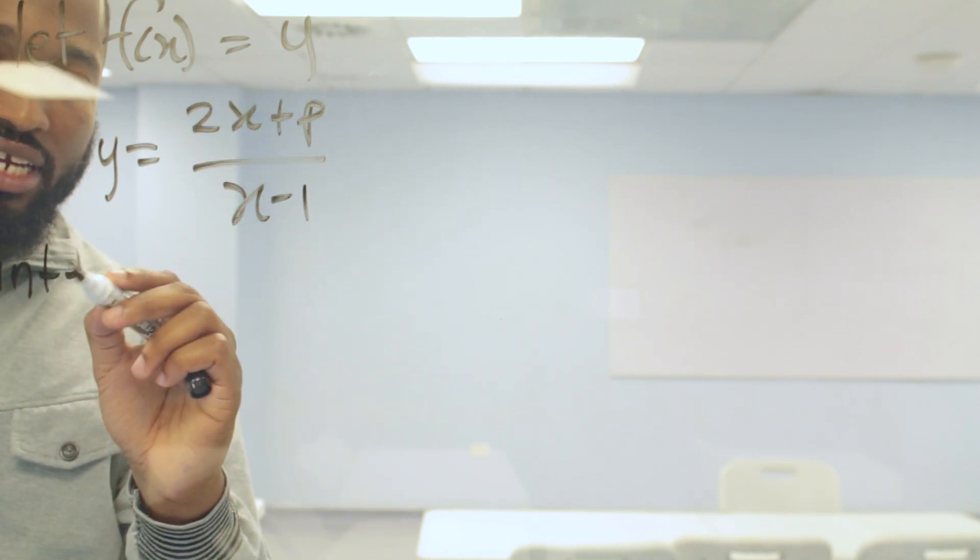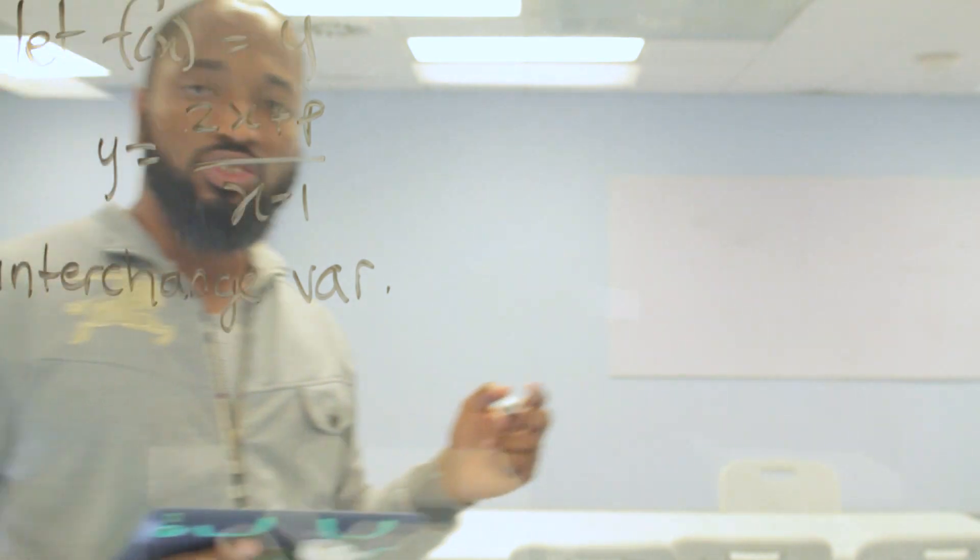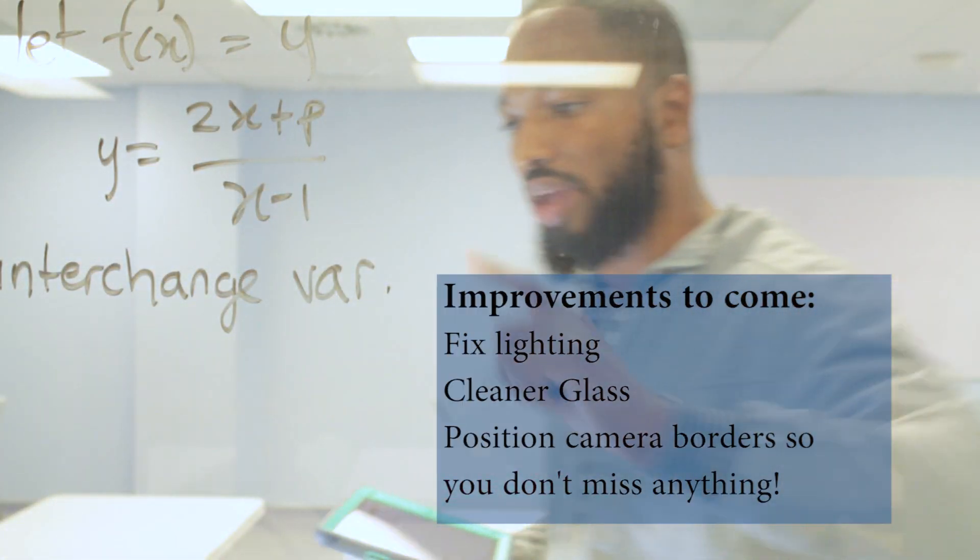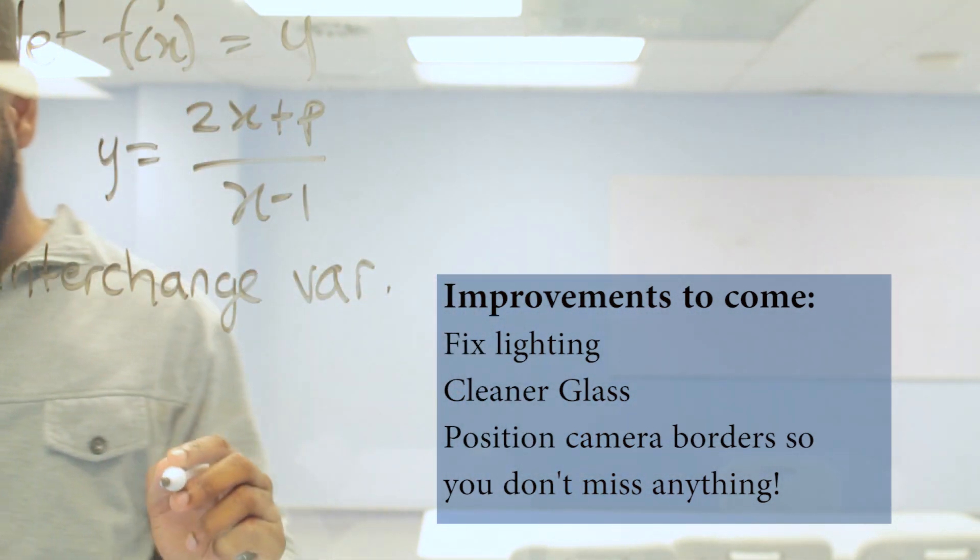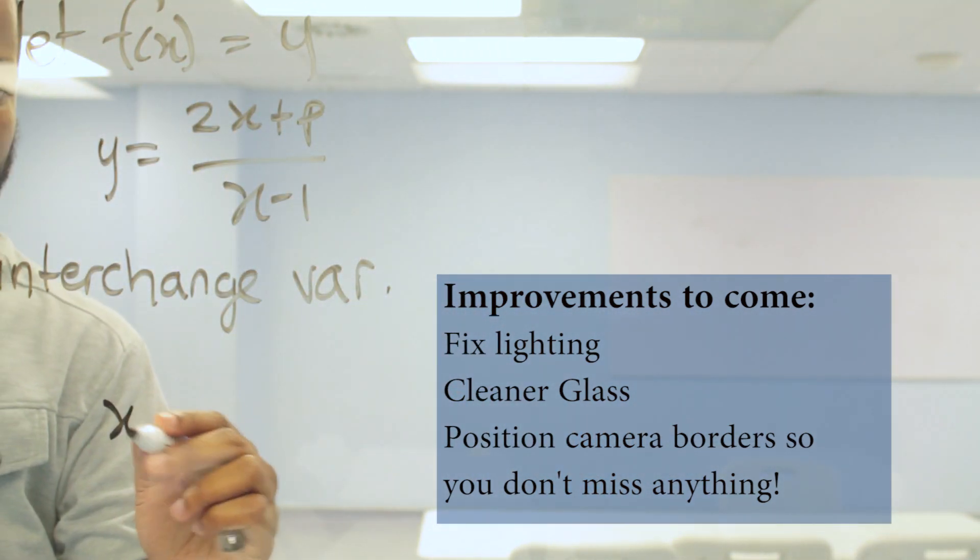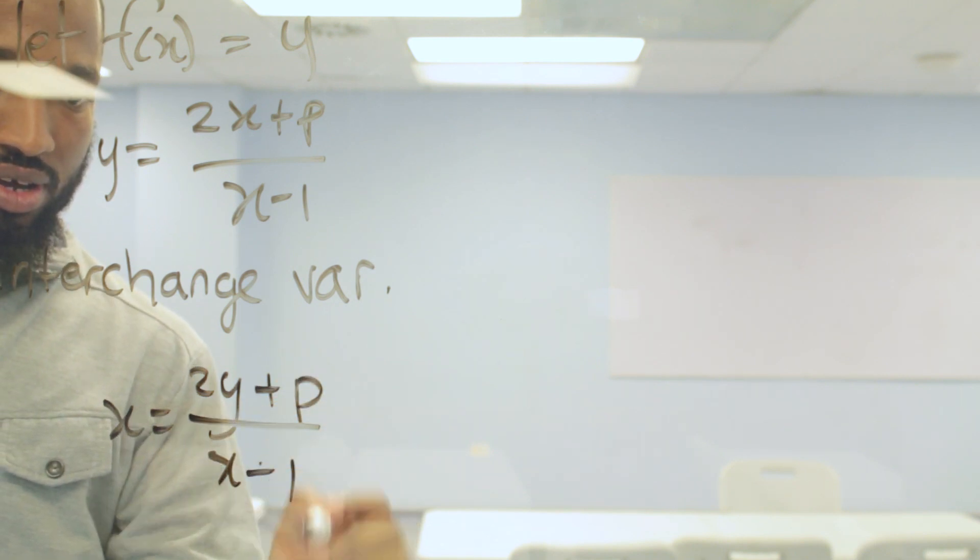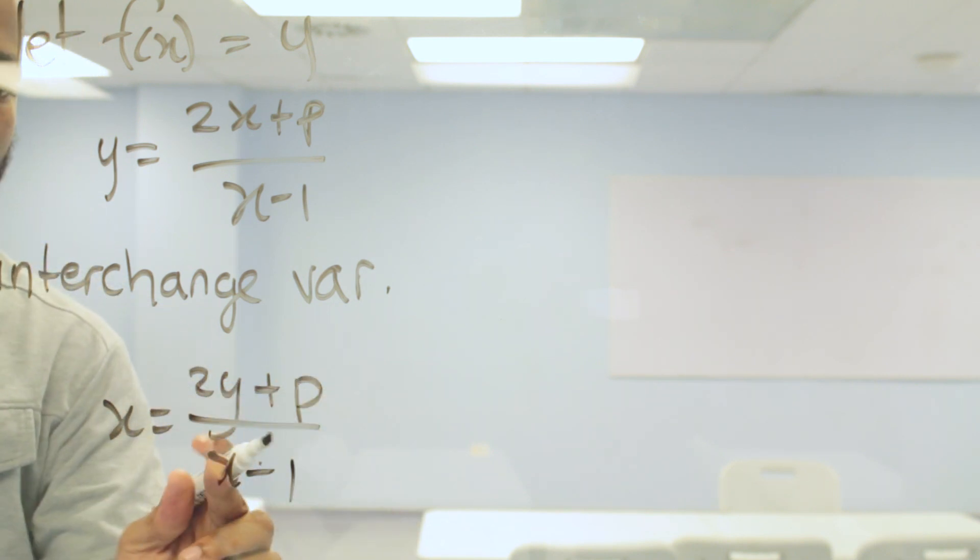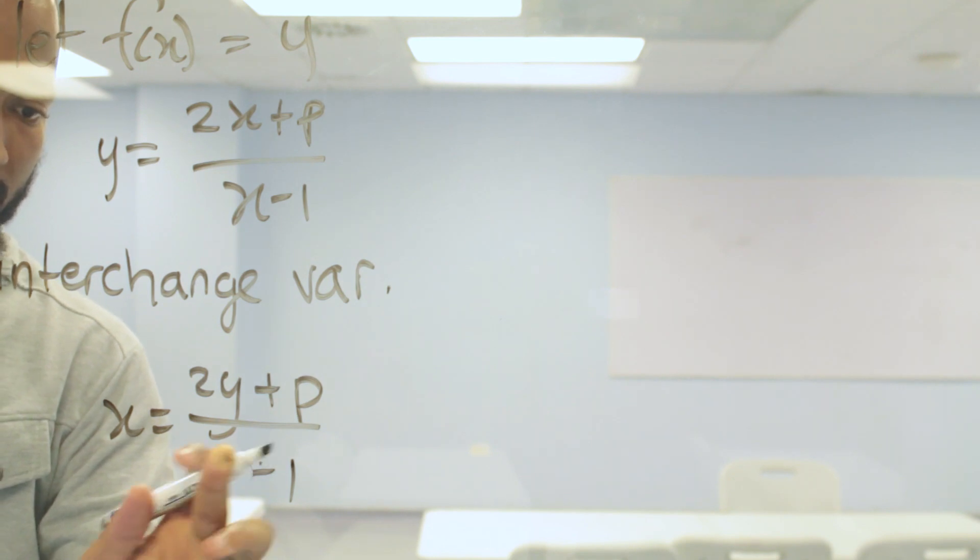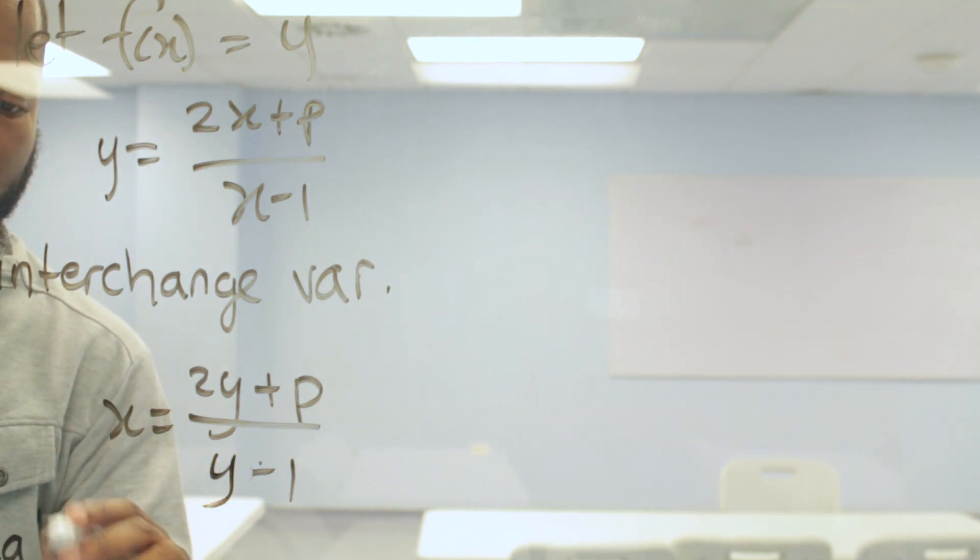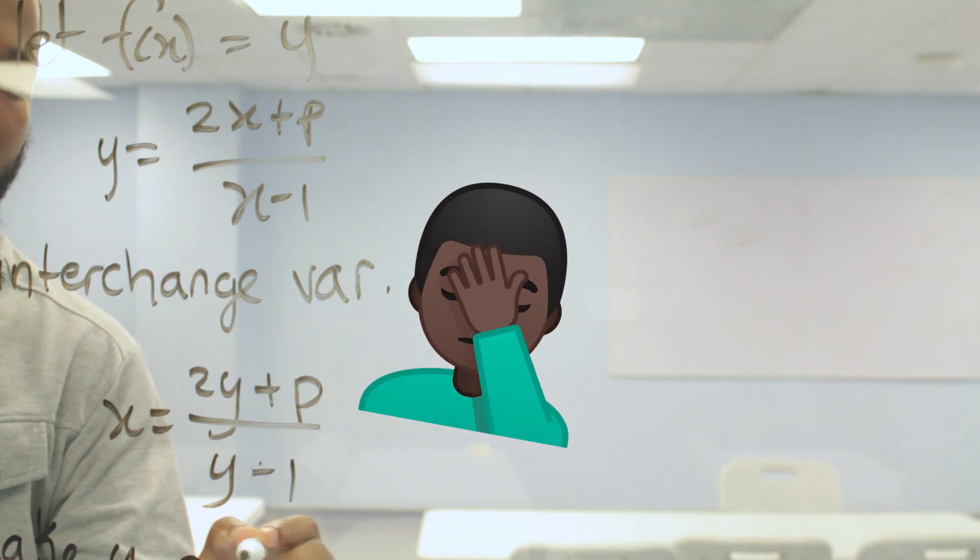So you want to interchange variables next. You're going about as the traditional manner. Anywhere you see x, you are going to put y, and anywhere you see y, you are going to put x. So you'll have x is equal to 2y plus p over y minus 1. And then you want to make y the subject of the formula.